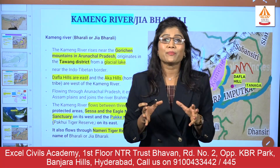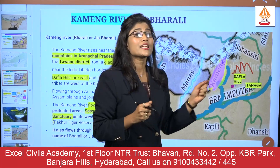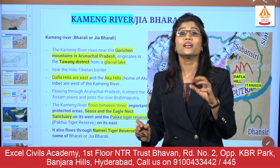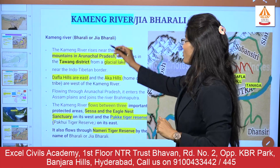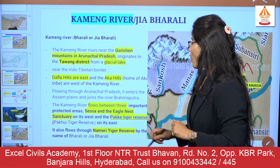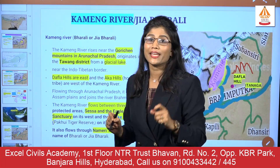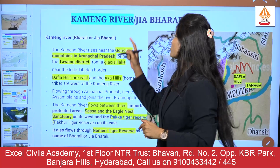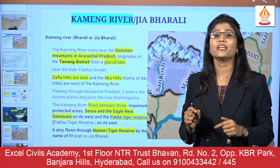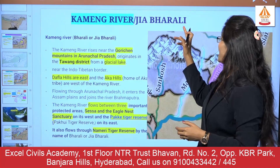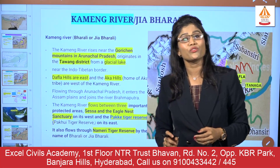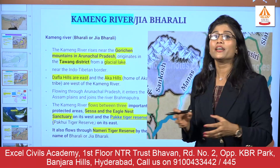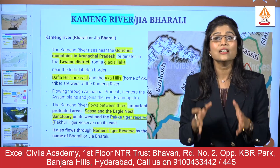On the left side of the Kameng river, the state capital Itanagar is located — remember exactly where Itanagar is located with respect to the Brahmaputra river system. The Kameng river is also known as the Jia Bharali or just Bharali river. Notably, the Nameri Tiger Reserve gets its water supply from this Jia Bharali river, which itself is the Kameng river.